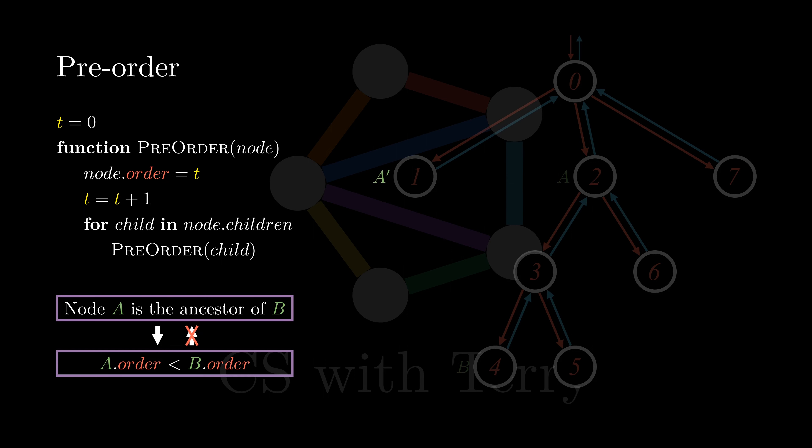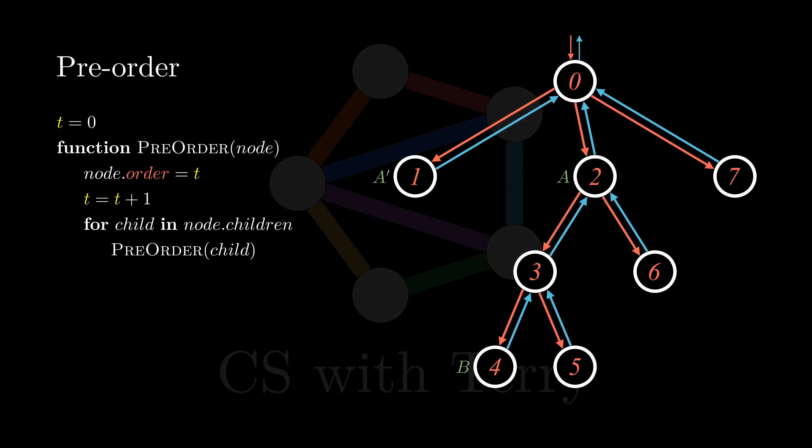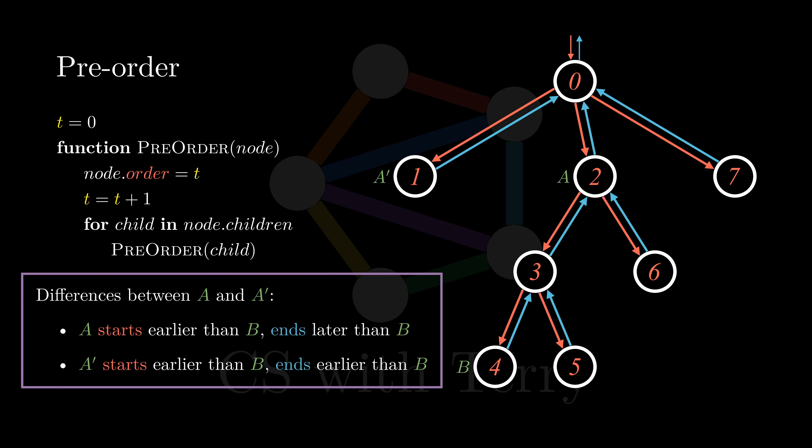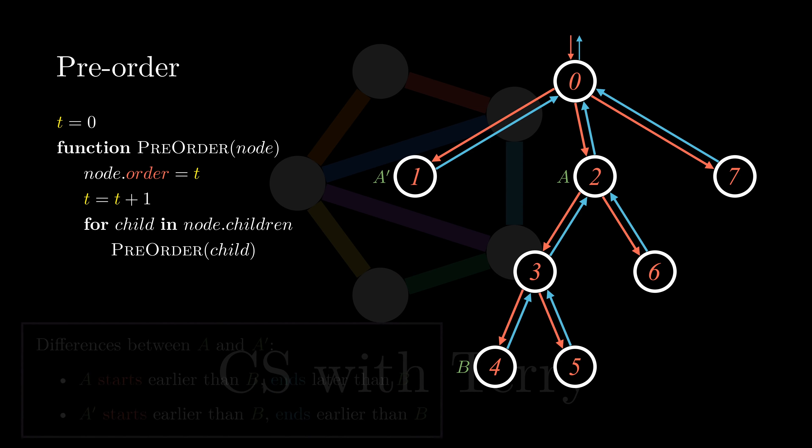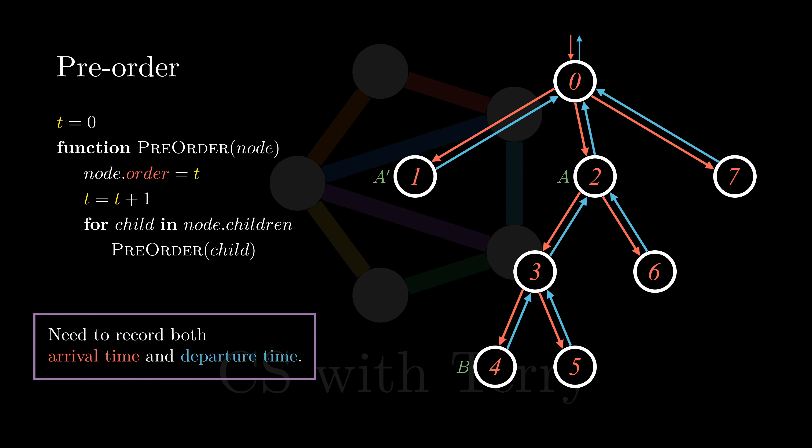After visiting all subtrees of A, we go back to node A and end our visit to it. When visiting A', we also assign an index to node A'. Since it does not have any subtrees, we just end our visit to A'. Now, we can see the difference between A and A'. For A, its arrival time is earlier than that of B, while its departure time is later than that of B. For A', although the arrival time is earlier than B, its departure also happens before visiting B. Therefore, to solve this problem, we not only need to record the node's arrival time, but also its departure time.